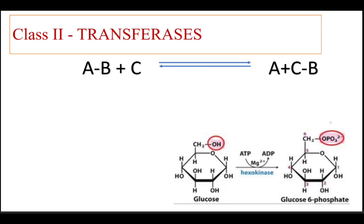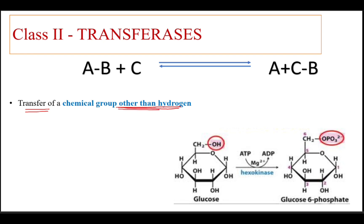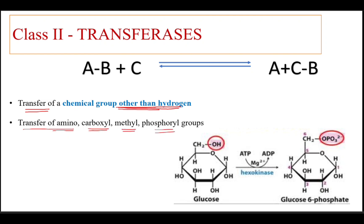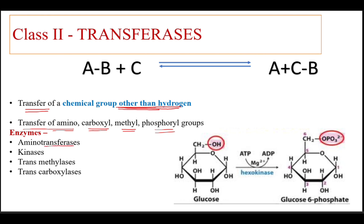Class 2: transferases. In this particular group of enzymes, there is transfer of a chemical group other than hydrogen. They are mainly involved in the transfer of amino, carboxyl, methyl, or phosphoryl groups. Examples are aminotransferases, kinases, transmethylases, and transcarboxylase. One example is where glucose is converted into glucose-6-phosphate and hexokinase is the enzyme catalyzing the transfer of a phosphate group from ATP to glucose to form glucose-6-phosphate.